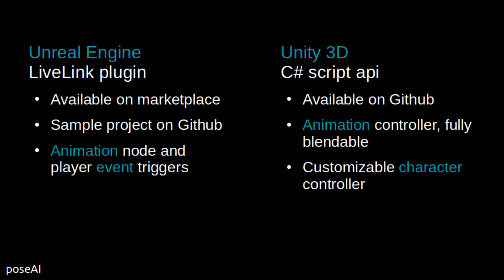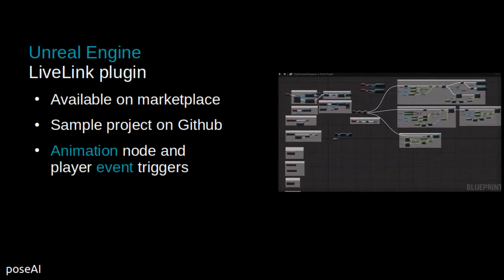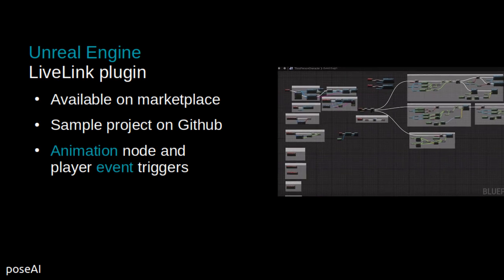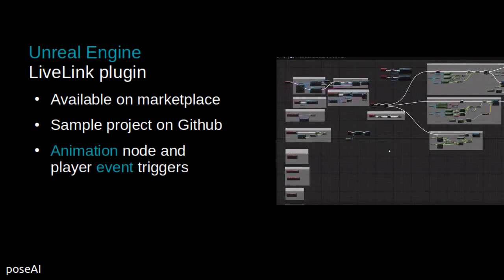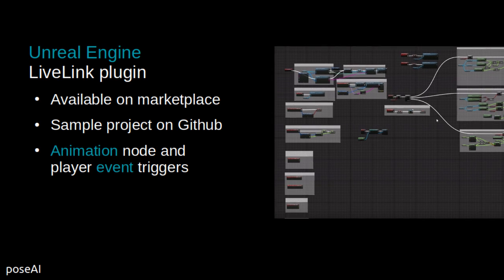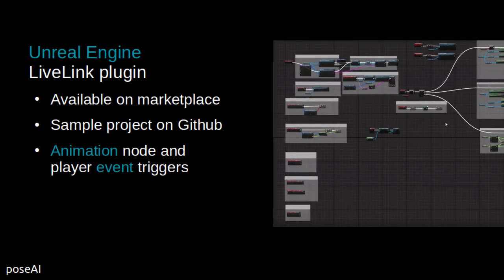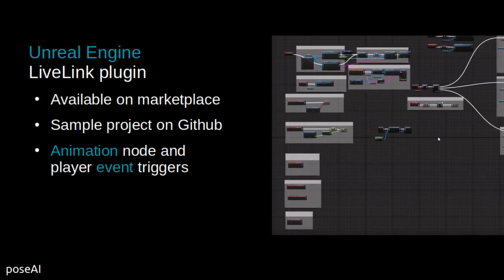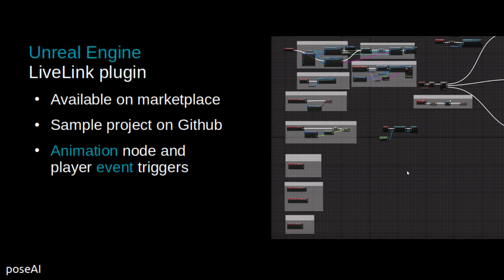We currently offer a plugin for the Unreal Engine and scripts for Unity 3D. We also have demo projects on our GitHub page so you can easily test and integrate our AI into your development pipeline. Our Unreal plugin is freely available on the Unreal Marketplace. It connects with the Live Link system to easily integrate animations. We have custom nodes to help set up Live Link sources in a project, and a controller with blueprint events to recognize player actions.